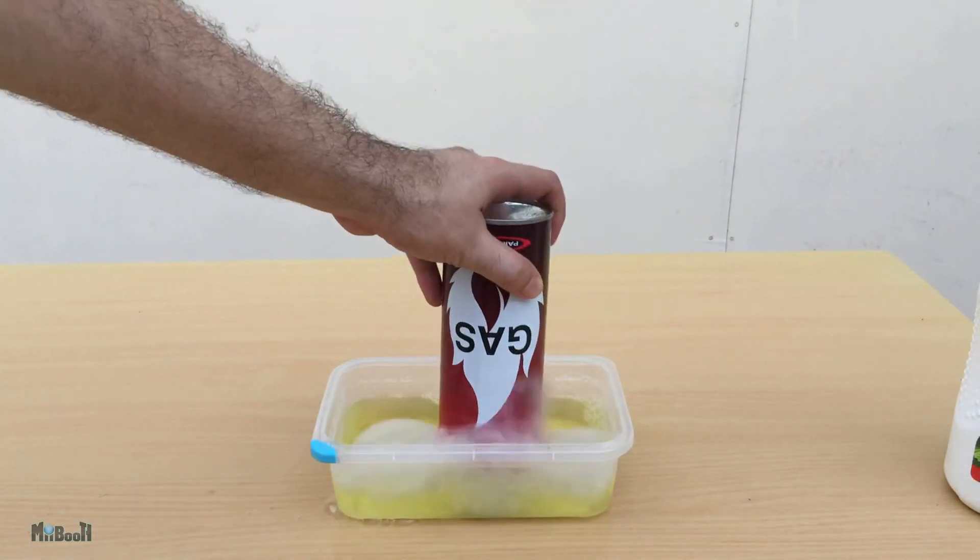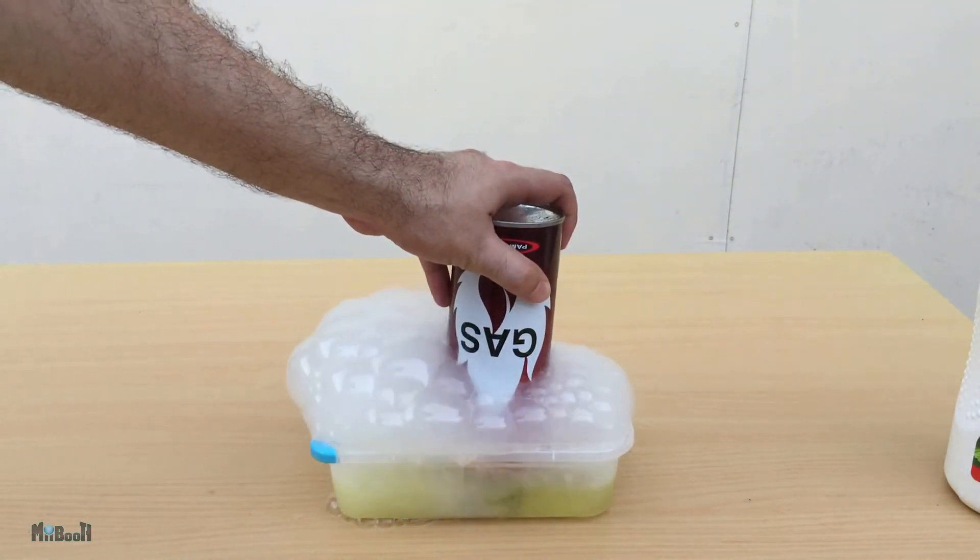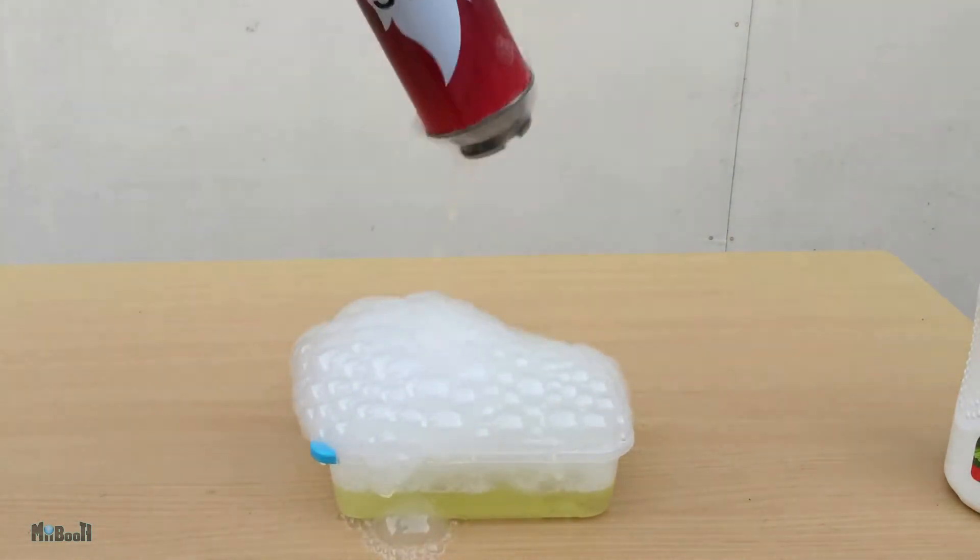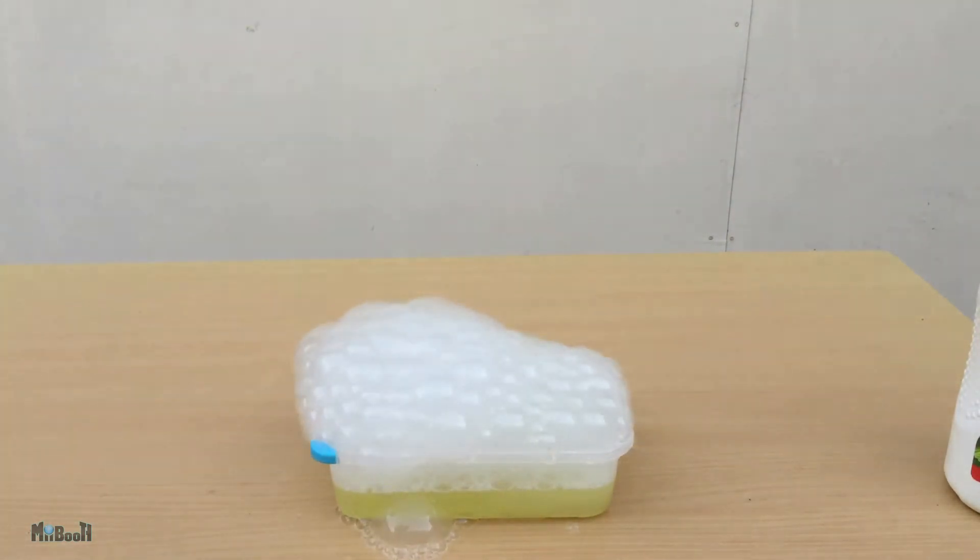I'll grab a butane spray and press it upside down to release a good amount of butane into the mixture. This will cause a bubble bath to rise which is full of the flammable gas.